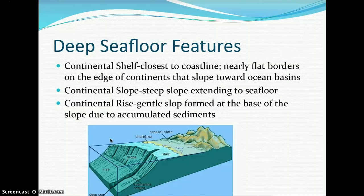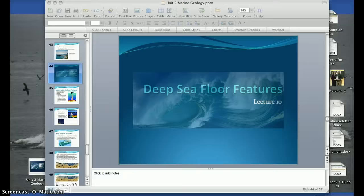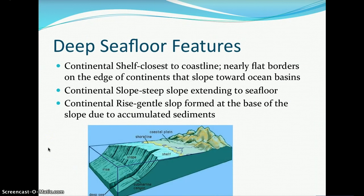The continental shelf is nearly flat, borders the edges of the continents, and slopes toward the ocean basins. It is typically the region where you would be swimming in the ocean. The continental slope is a steep slope that extends to the bottom of the seafloor. The continental rise is a gentle slope formed at the base of the continental slope due to accumulated sediment. Here are your continental shelf, continental slope, and continental rise.